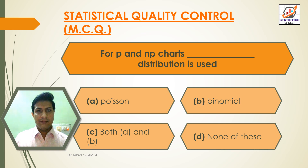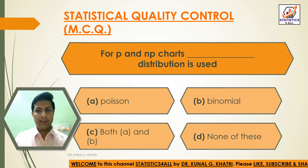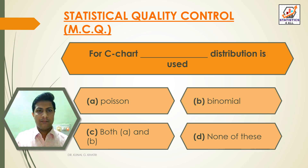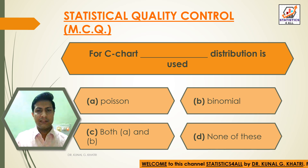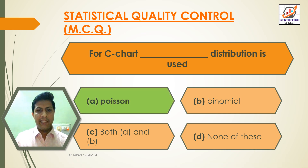Next question: for P and NP charts, which distribution is used? Option A: Poisson, Option B: binomial, Option C: both A and B, Option D: none of these. Answer: Option B — binomial distribution is used for P and NP charts. Option A — Poisson distribution is used for C chart.